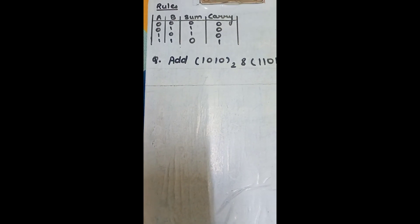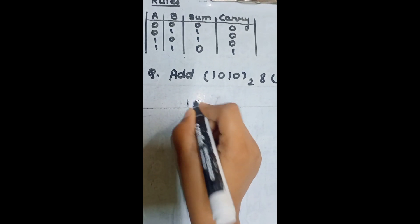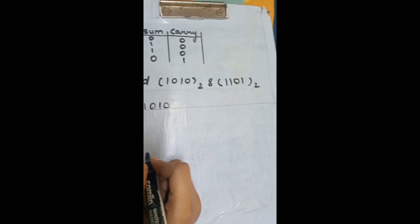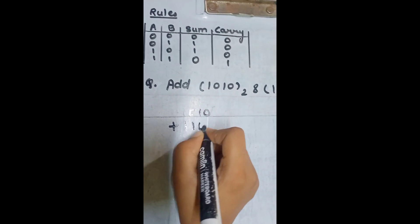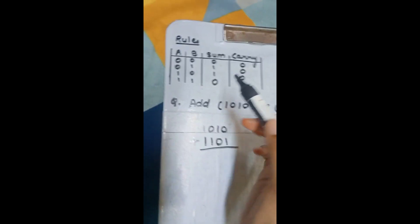So, write here like 1, 0, 1, 0 plus 1, 1, 0, 1. 1, 1, 0, 1. So, as per the rules,